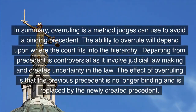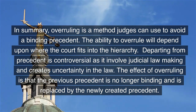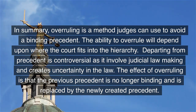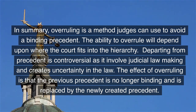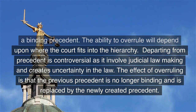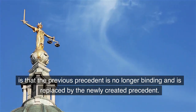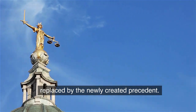In summary, overruling is a method judges can use to avoid a binding precedent. The ability to overrule will depend upon where the court fits into the hierarchy. Departing from precedent is controversial as it involves judicial lawmaking and creates uncertainty in the law. The effect of overruling is that the previous precedent is no longer binding and is replaced by the newly created precedent.